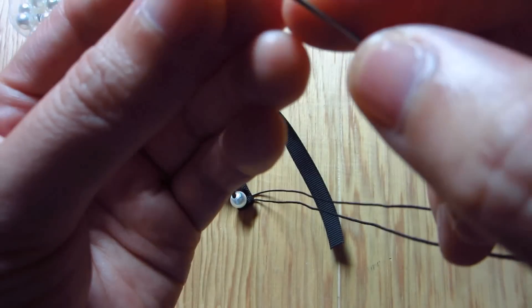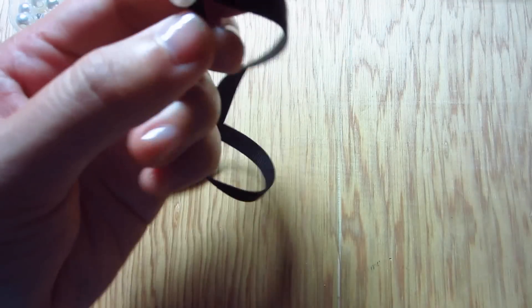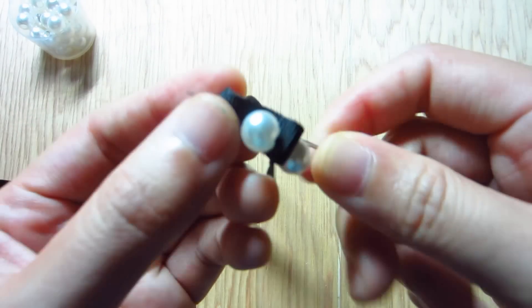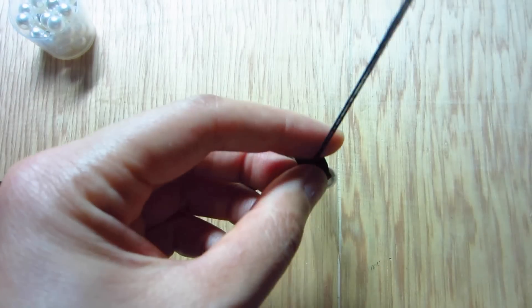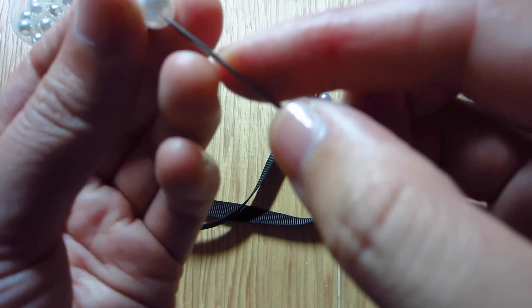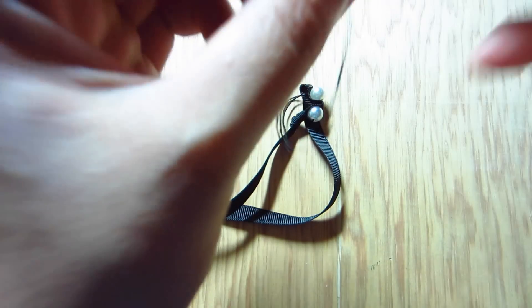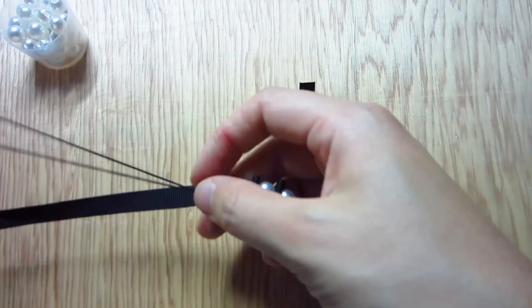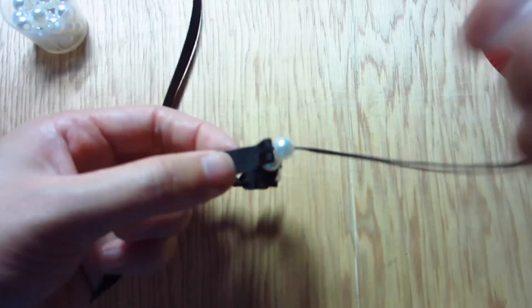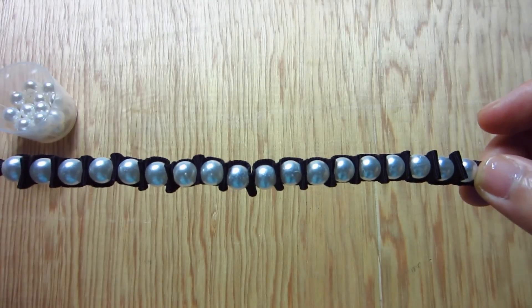Take another pearl, go down, and come back up for half an inch. The number of the beads will depend on the size of your wrist. Now keep stringing all your pearls until you get this.